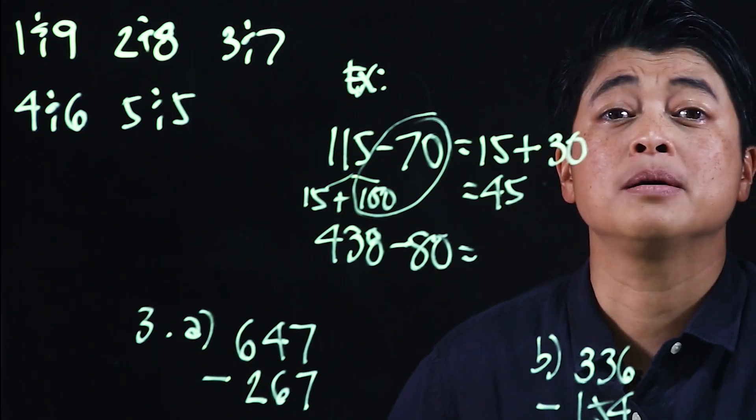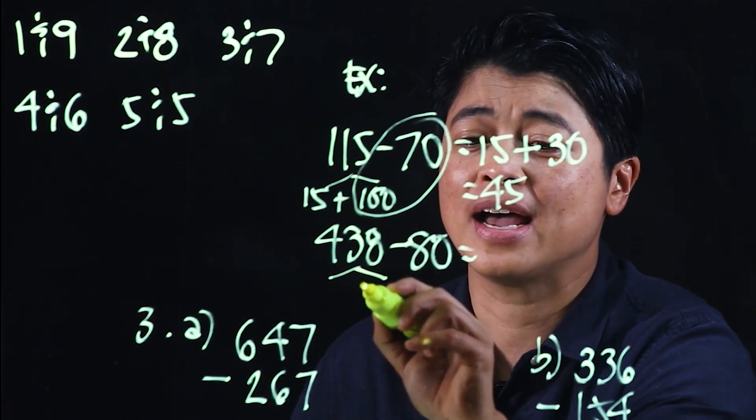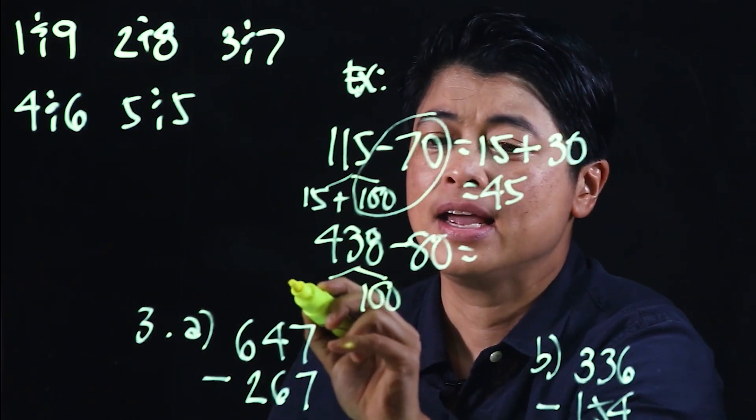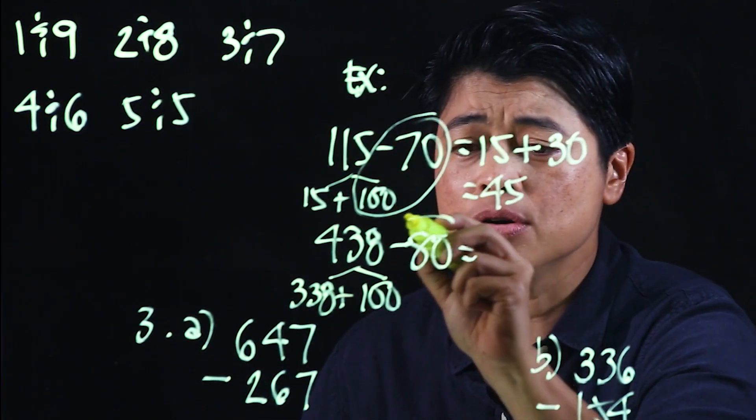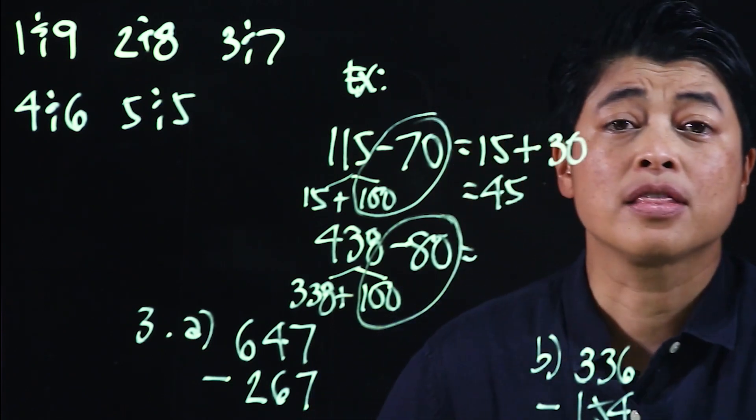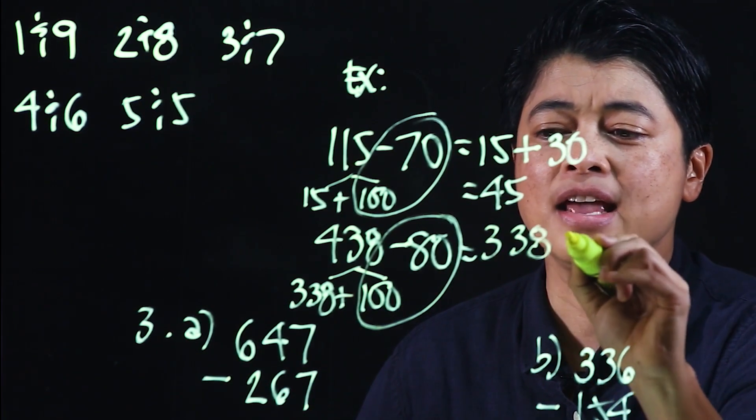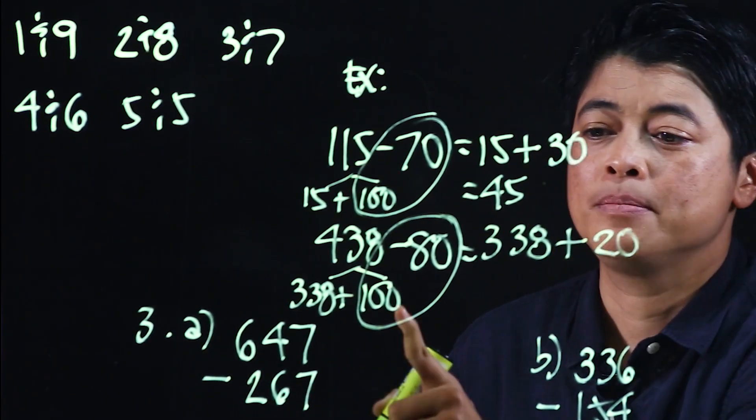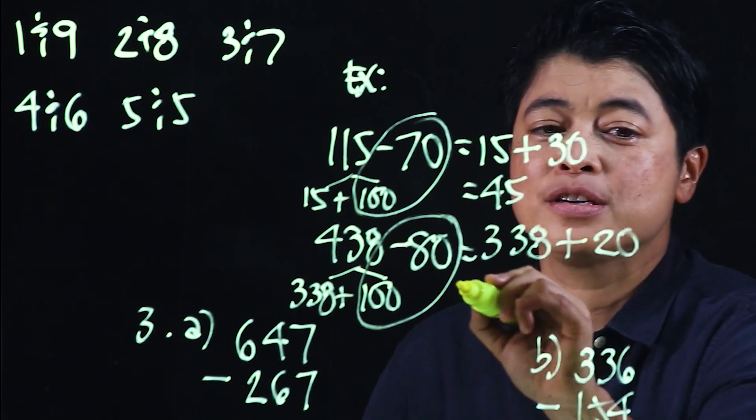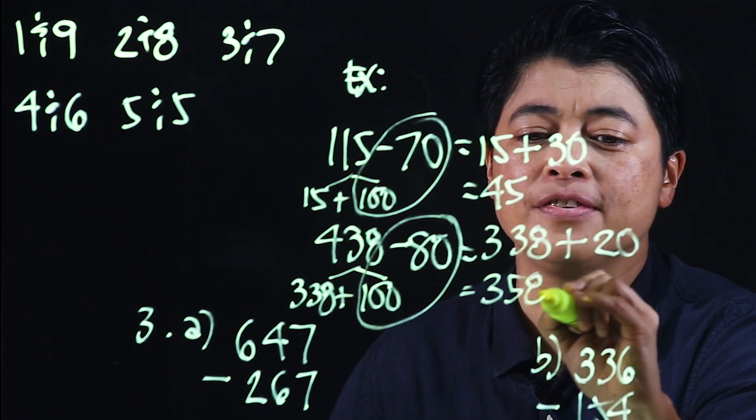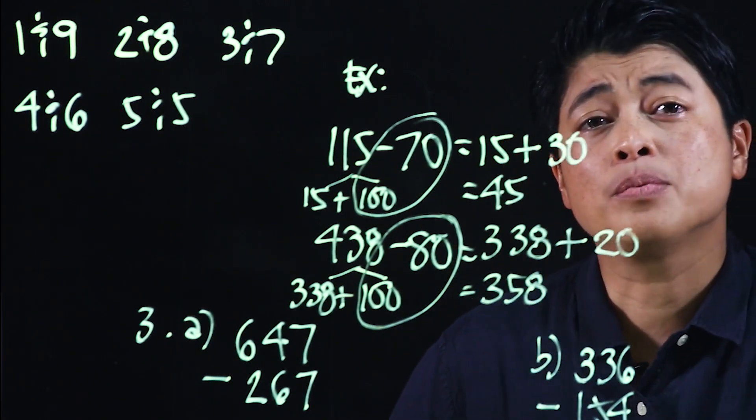When it becomes big, if we look at this, what we want to do is break this down as 100 and 338. So when we subtract those, that will leave us with 338 plus 20, because 100 minus 80... 30 is 20, which means this is now 358.